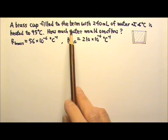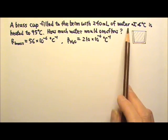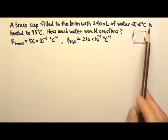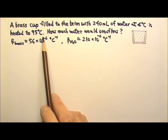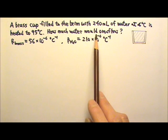A brass cup filled to the brim with 240 mL of water at 4 degrees Celsius is heated to 95 degrees Celsius. How much water would overflow?